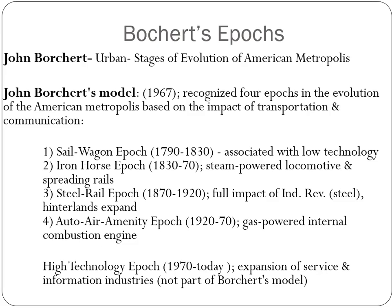The first thing we need to talk about is John Borchert's epics — the urban stages of evolution of the American metropolis. He looked at how the American city changed based on transportation and communication. The first is the sail-wagon epic, associated with low technology: sailboats, wagons, those types of things. Then the invention of the steam engine and the locomotive led to the iron horse epic, which was steam-powered railroads.